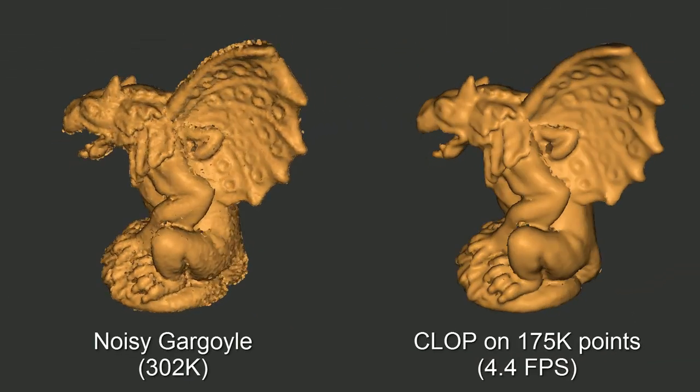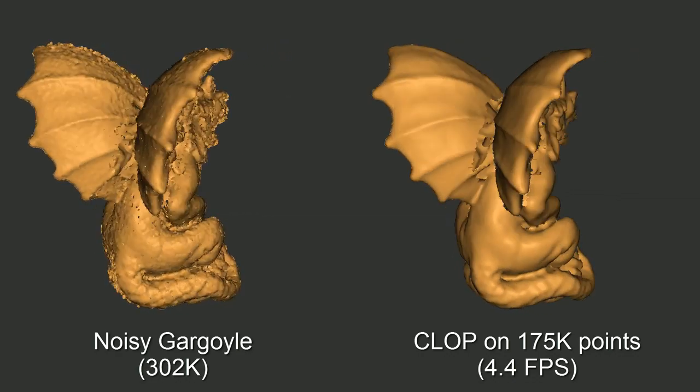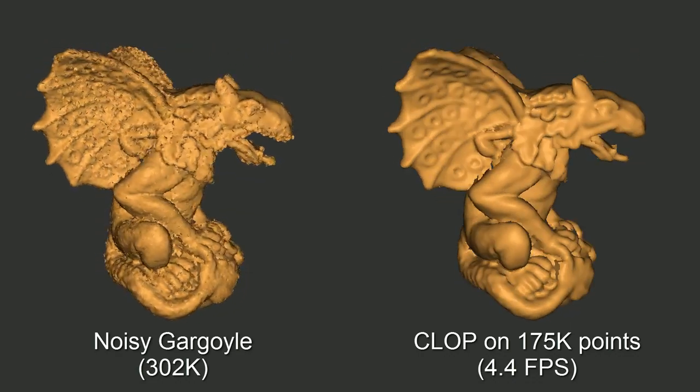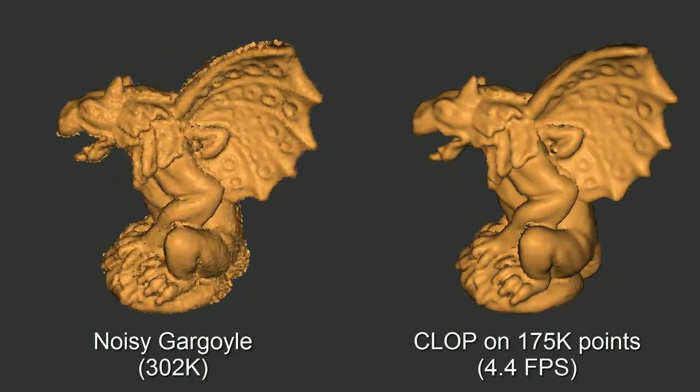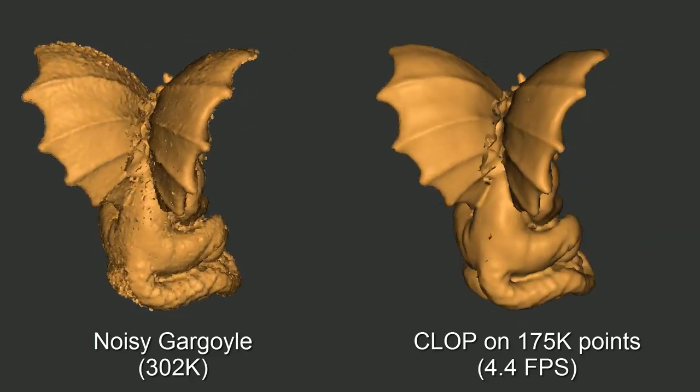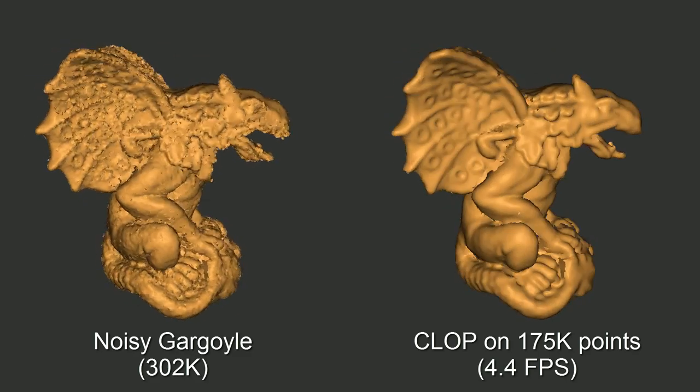We use an efficient output-sensitive implementation, which can perform the entire algorithm in screen space after projecting the visible part of a model to the screen. Here we see a large gargoyle of over 300,000 points, where approximately 60% of its data is used for screen space reconstruction.